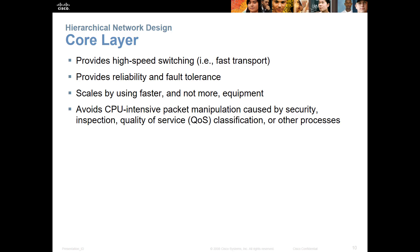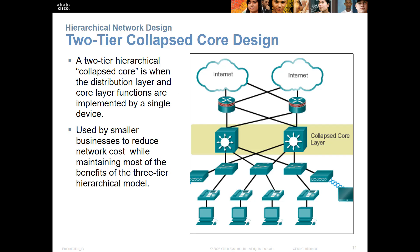The core layer is again the highest-speed switching — reliable, fault tolerant, and scalable. It's going to use the best switches and better equipment. You want to avoid CPU-intensive packet manipulation at the core; things like security and QoS classifications should be done at lower levels. You can also collapse those tiers — instead of a separate core, distribution, and access, you can combine core and distribution into one tier with access by itself.